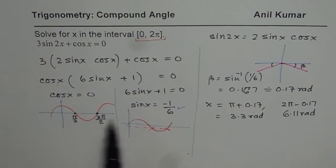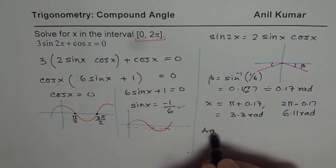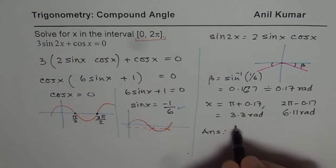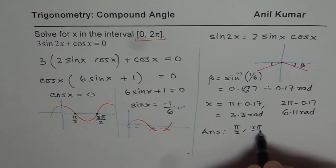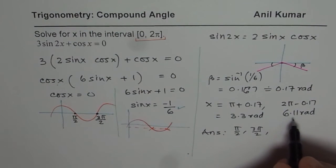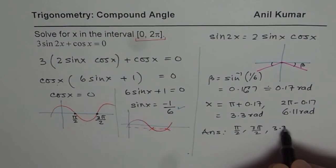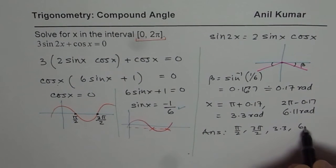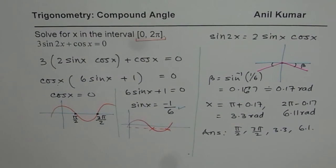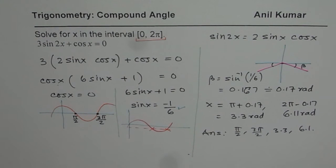Combine your solutions and write down your answer. So your answers are π/2, 3π/2. And these radiance values to one decimal place will be 3.3 radiance and 6.1 radiance. So that is how you could answer such a question. I hope that helps. Thank you.